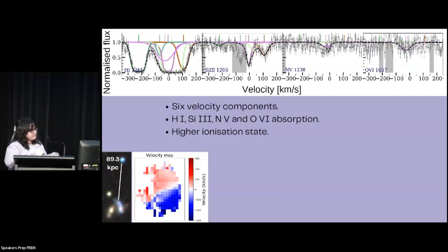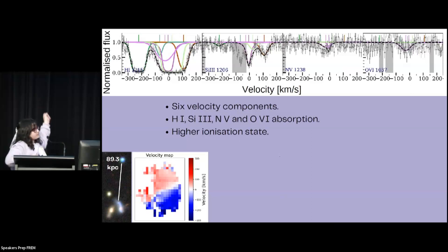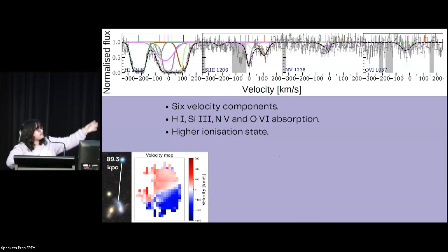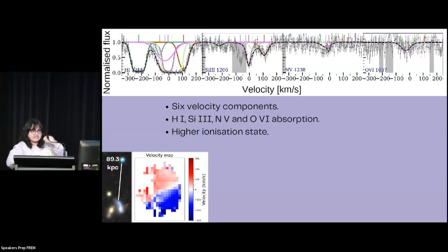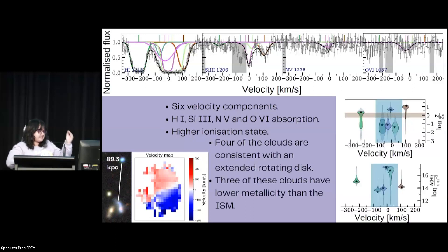For the merging system, the impact parameter is almost 90 kiloparsecs. When we modeled the absorption, we found six velocity components. We found absorption from neutral hydrogen, Si III, N V, and O VI — so it's in a higher ionization state, which is already very interesting. Here we have the metallicities and column densities of each of the velocity components that we found.